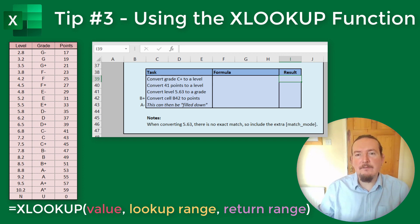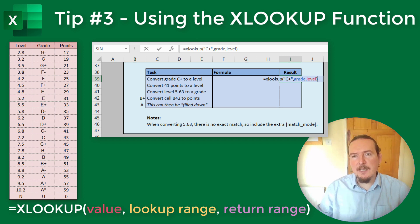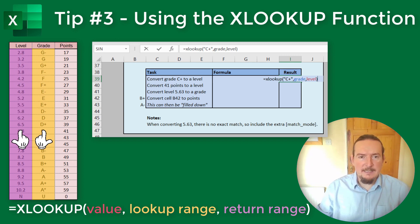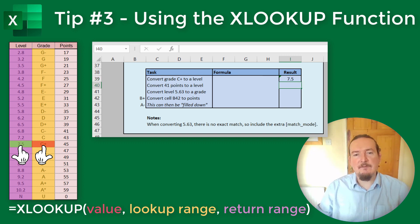So if I want to find the equivalent level to a grade C+, I can type in the formula equals XLOOKUP "C+", grade, level. C+ is the lookup value — I have to type it wrapped in speech marks because it is text and not a number. Grade is the lookup range and level is the return range. XLOOKUP is going to look down the grade list and the level list until it comes across C+ on the grade list, then return whatever value it finds at the same point on the level list — so that is going to be 7.5.